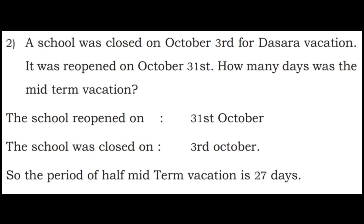Second example: A school was closed on October 3rd for Dasara vacation and was reopened on October 31st. How many days was the midterm vacation? The school reopened on 31st October and was closed on 3rd October. So, the period of the midterm vacation is 31 minus 3, which equals 27 days.